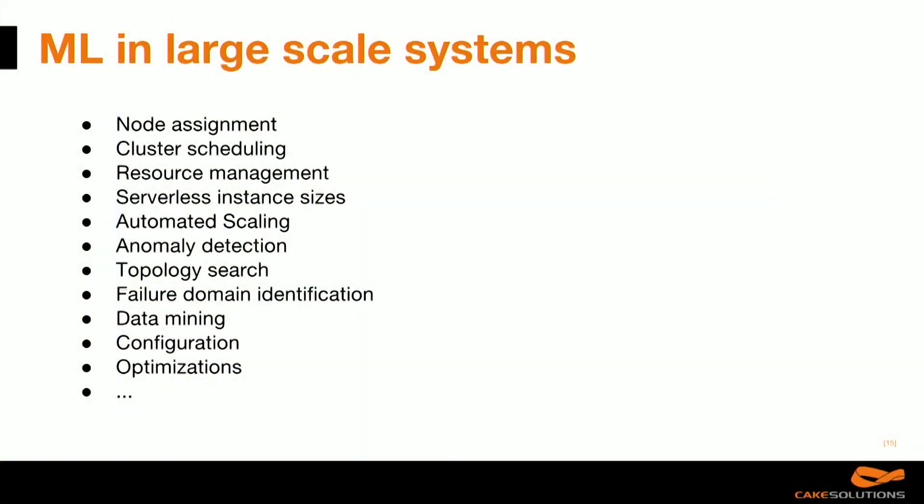Machine learning is already used in many large-scale systems for various things. Applications that are already researched or in use include node assignment, cluster scheduling, and resource management — common problems in large-scale data centers — as well as serverless instance sizing, automated scaling, and data mining to understand what your system is doing. Today we'll talk about configuration optimization, which is a less common use case but is useful to explain some of the concepts.